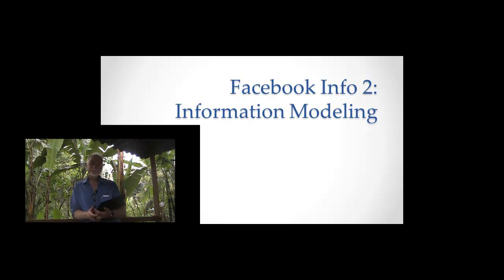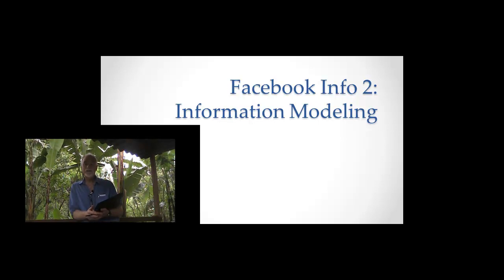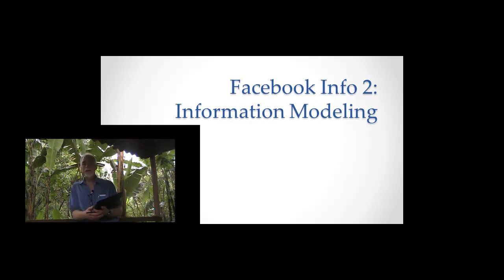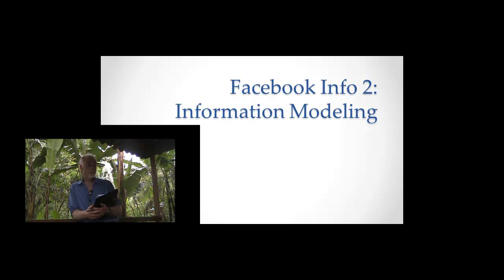Let's talk about information modeling. In the previous lecture where I introduced you to information, I talked about the idea that information has types and attributes — the types have attributes, the attributes have values — and we group those together into information items. If you don't remember that, you might want to go back and look at it again because I'm going to use that now. Instead of talking abstractly, now we're going to do some practice that hopefully you can apply for the rest of your life on all the different information systems you ever encounter.